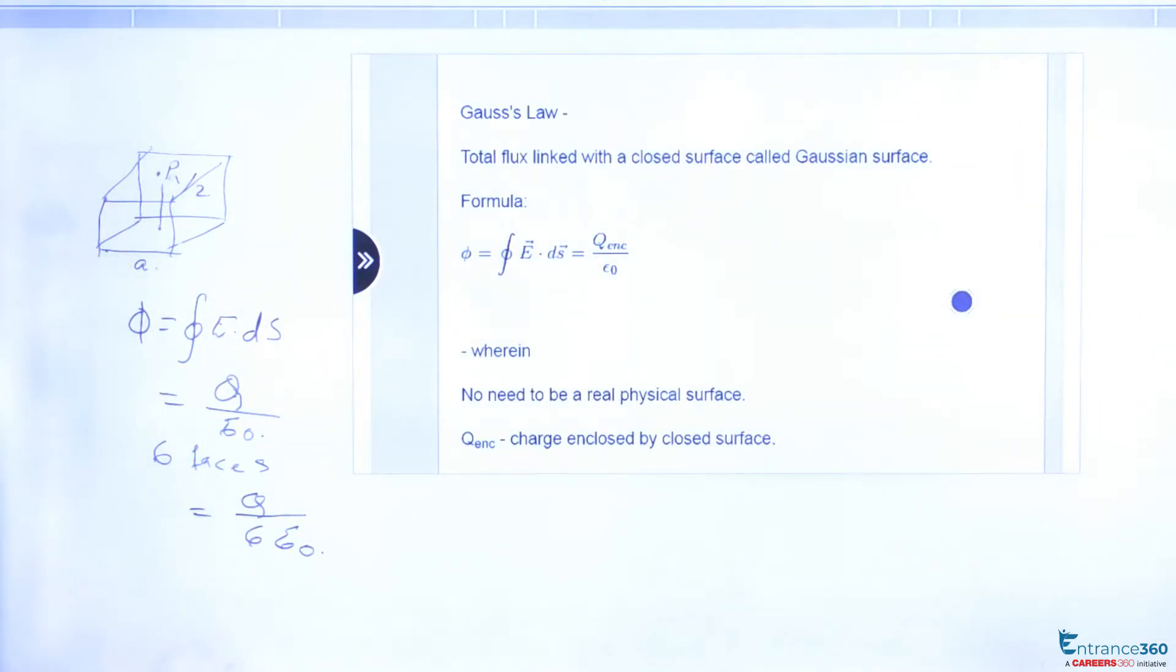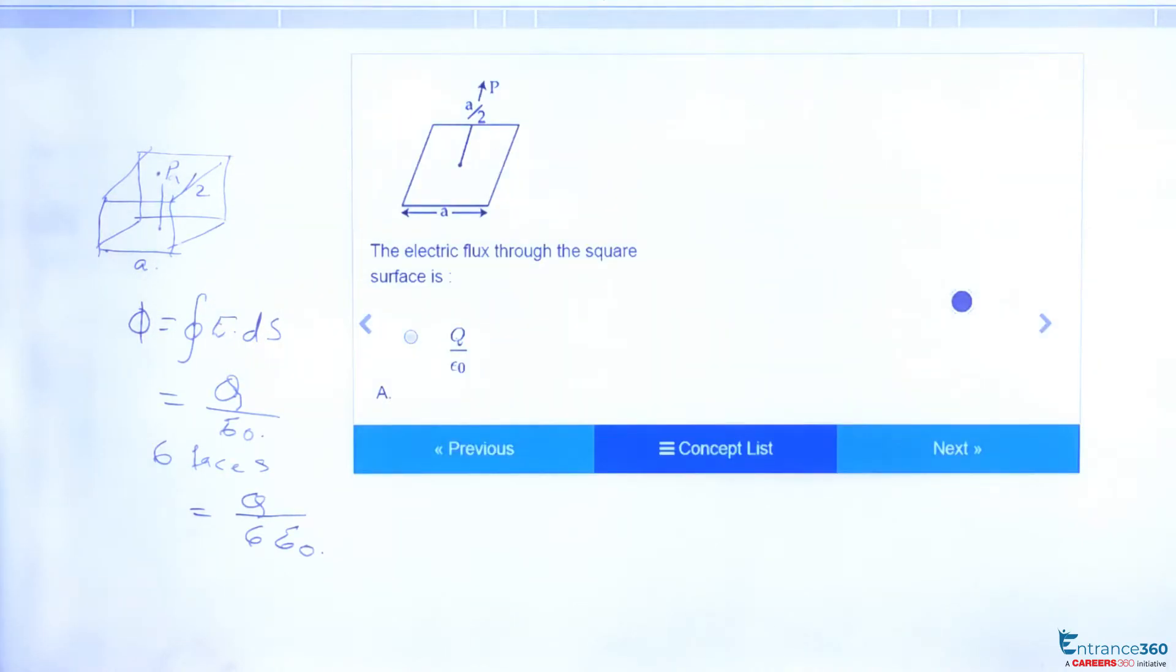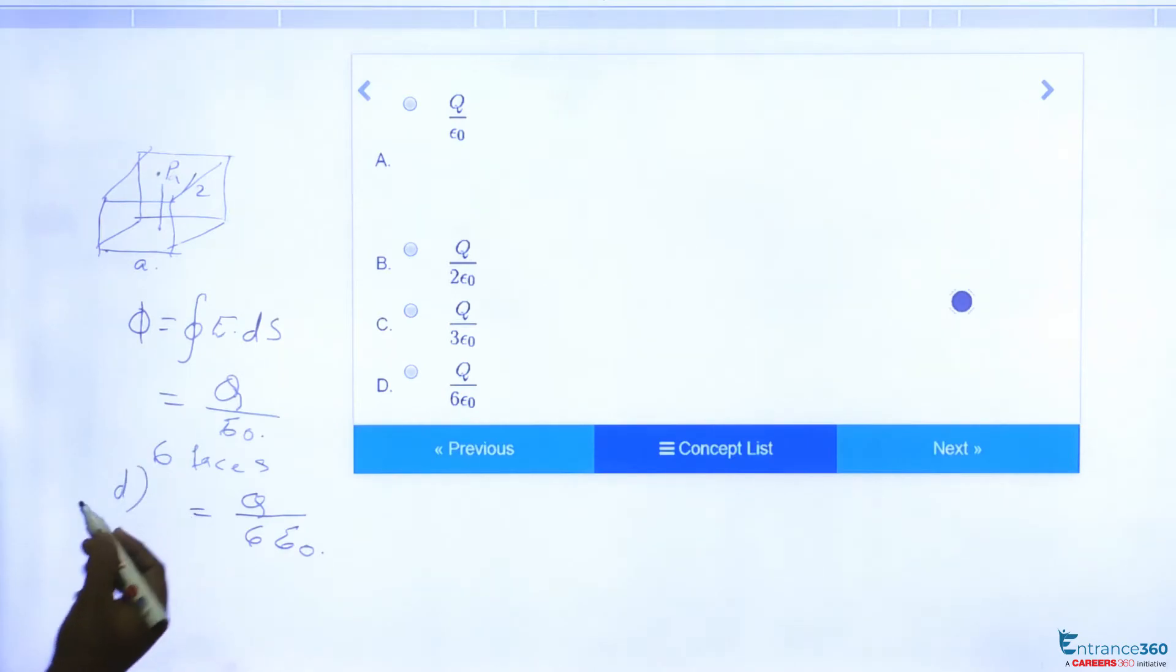which is the required answer. So q/(6ε₀) is our option D. The right answer is D.